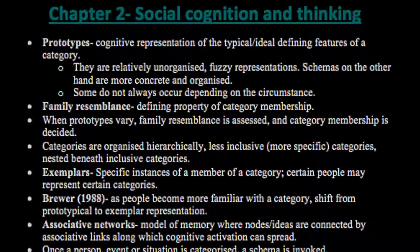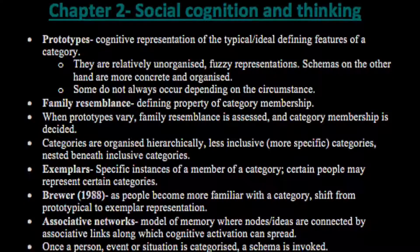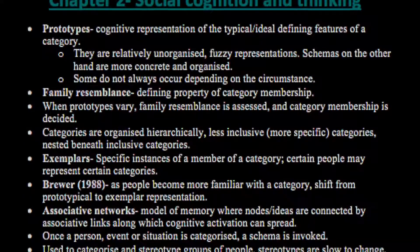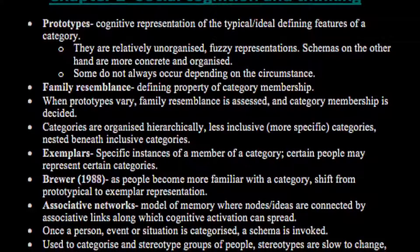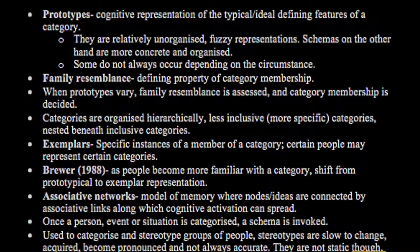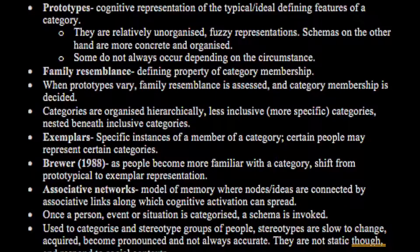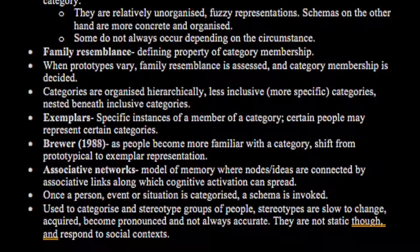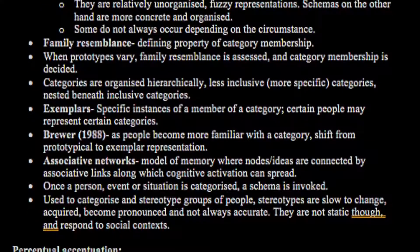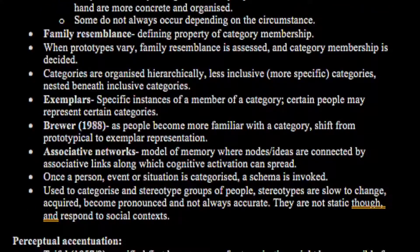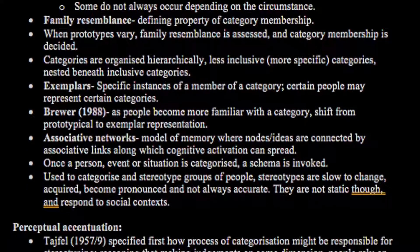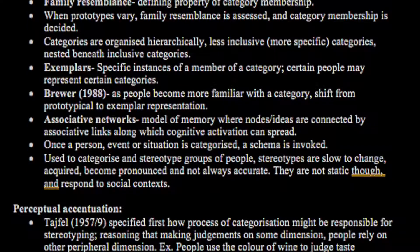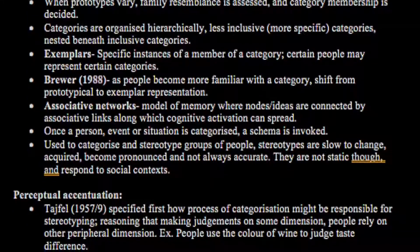Family resemblance refers to defining properties of category membership; when prototypes vary, family resemblance is asserted and category membership is decided. Categories are organised hierarchically, with less inclusive or more specific categories nested beneath more inclusive ones. Exemplars are specific instances of a member of a category where certain people may represent the category. Brewer in 1988 found that as people became more familiar with a category, there was a shift from prototypical to exemplar representation. Associative networks are models of memory where nodes or ideas are connected by associative links along which cognitive activation can spread.